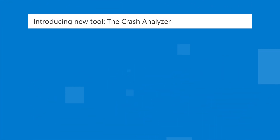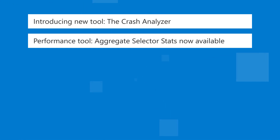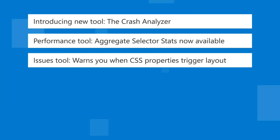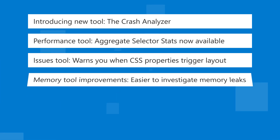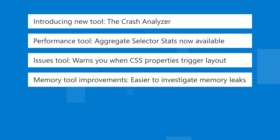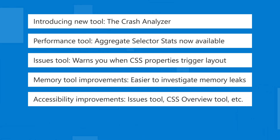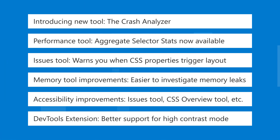In these versions, we introduced a brand new tool, the Crash Analyzer. Aggregate selector stats are now always available in the performance tool. The issues tool now warns you when CSS properties trigger layout during CSS animations. We made several improvements to the memory tool, making it easier to investigate memory leaks. We also made several accessibility improvements to the issues tool, CSS overview tool, and DevTools in general. And finally, the DevTools extension in VS Code now has better support for high contrast mode.